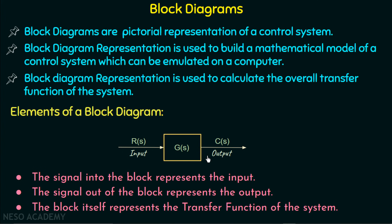But this is the basic block diagram representation of a control system. Practically, control systems are more complex in nature — they consist of multiple subsystems. There are interconnections of many blocks connected with branches and arrows. So to analyze those complex representations, we need to discuss some more elements of block diagrams like summing point and takeoff point. We will now move on to the discussion of summing point and takeoff point.